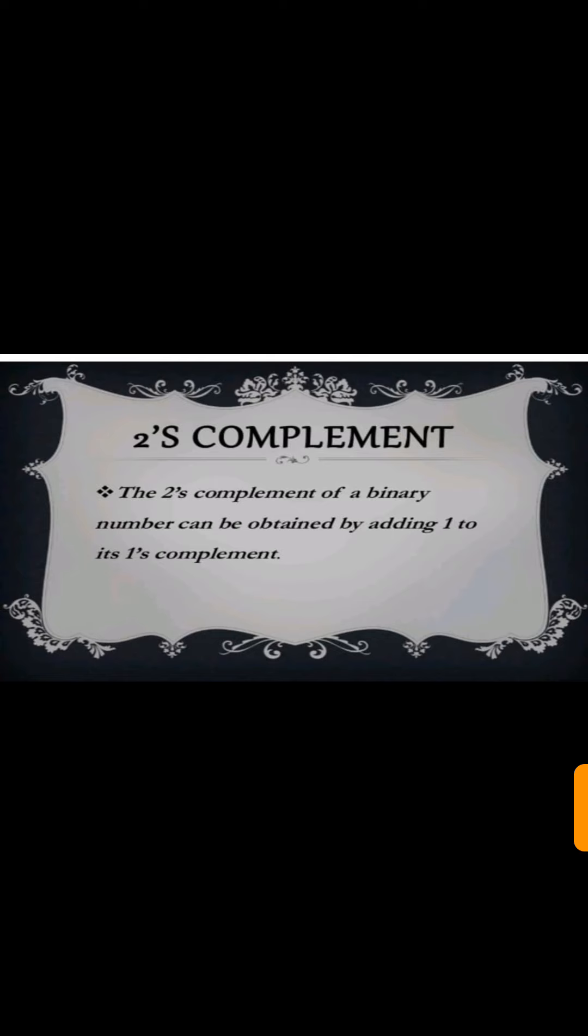Two's complement. The two's complement of a binary number can be obtained by adding 1 to its one's complement. That means if we want to do subtraction in binary, then first we have to do one's complement of a number and then we will add 1 to it to get the two's complement.